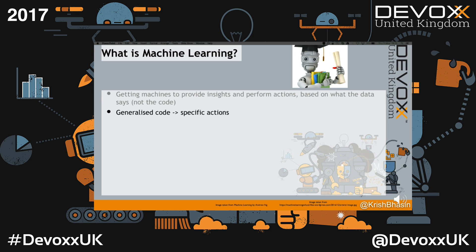Even more simply, it's the idea of writing generalized code that can do specific things. People often ask how machine learning relates to AI. For our purposes, it's just a specific subset — AI is generally making computers behave smart. Dictionaries and academics will give you proper definitions, but it's kind of just semantics.